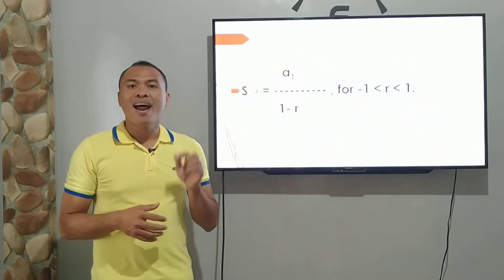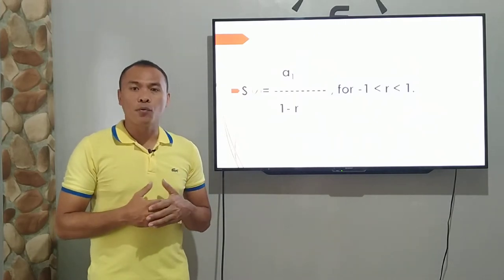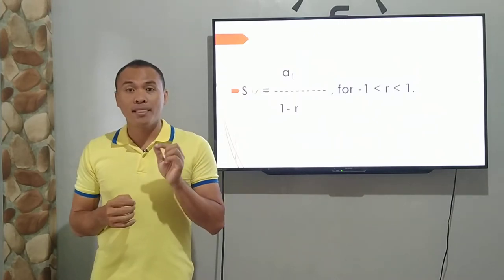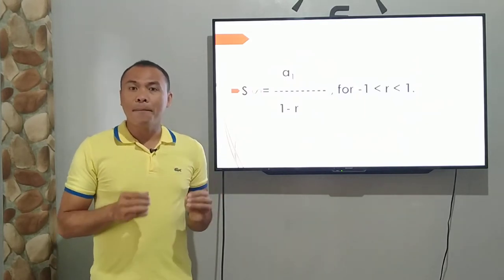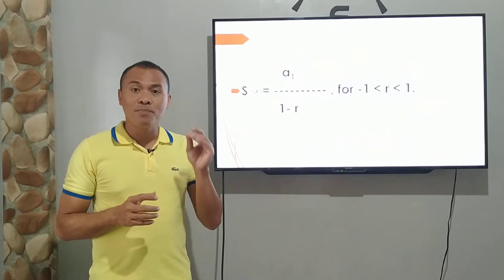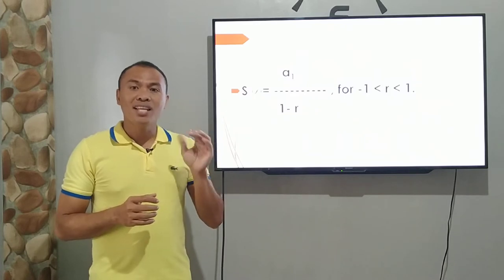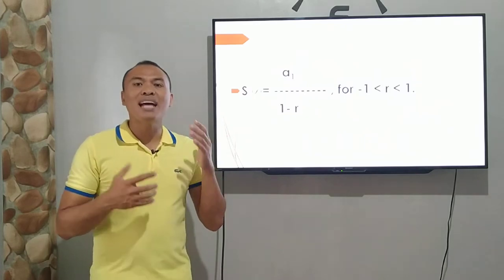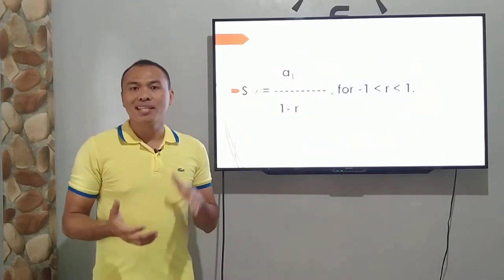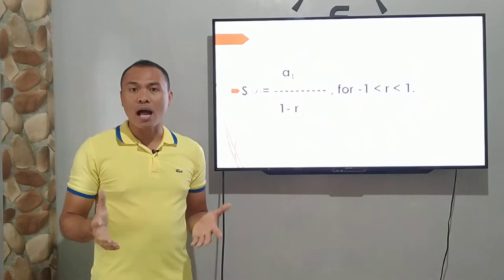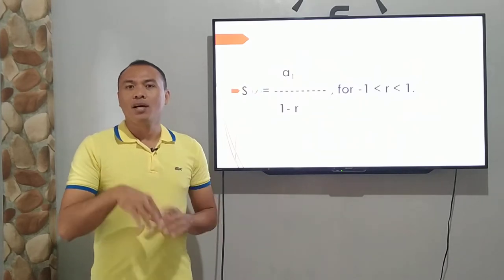For r is greater than negative 1 or r is less than 1. Ibig sabihin, ang r natin dapat siya ay naglalaro between negative 99 hundredths to positive 99 hundredths. Tandaan natin kung saan siya bumuka, yun ang malaki.